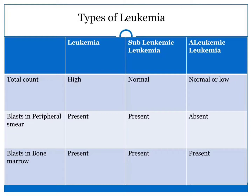Now discussing the total count from CBC: normally we suspect leukemia where the total count is high, but there are conditions known as sub-leukemic and aleukemic leukemia in which there is no increase in total count. In normal leukemia, there is high total count with presence of blasts in peripheral smear and blasts in bone marrow. In sub-leukemic leukemia the total count is normal but blasts are seen in peripheral smear and bone marrow. In aleukemic leukemia, total count may be normal or decreased and blasts are absent in peripheral smear but present in bone marrow.